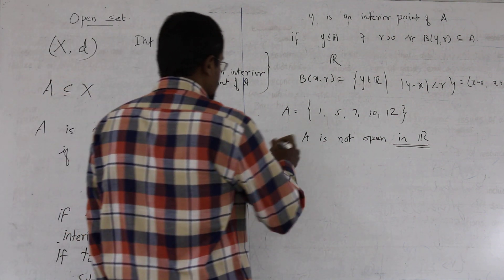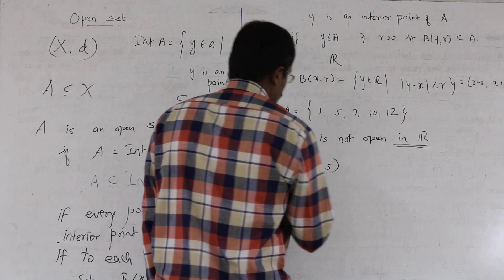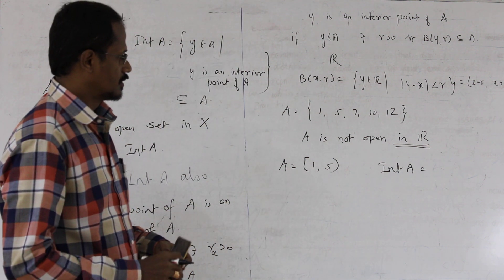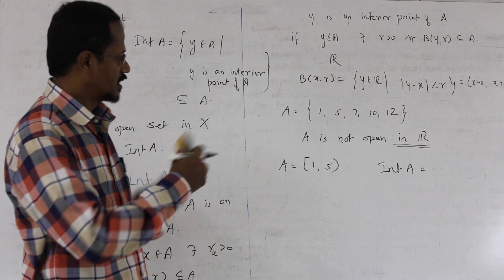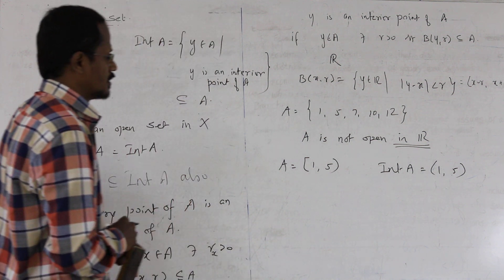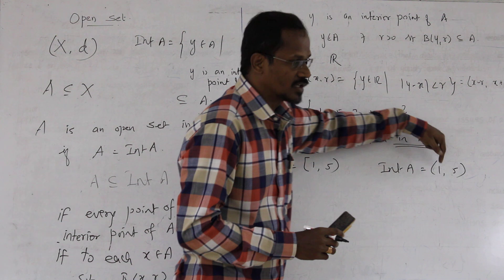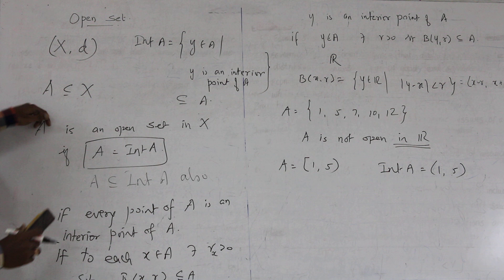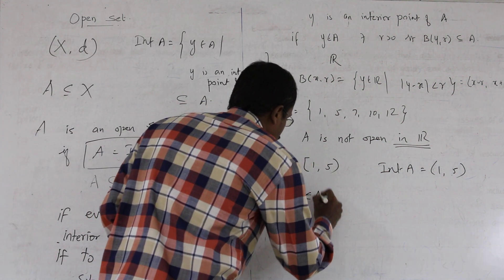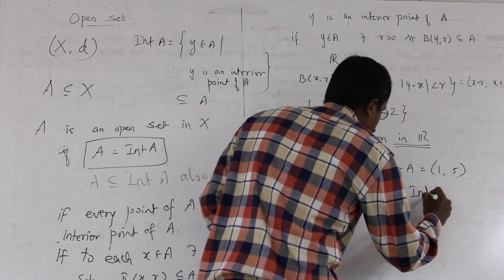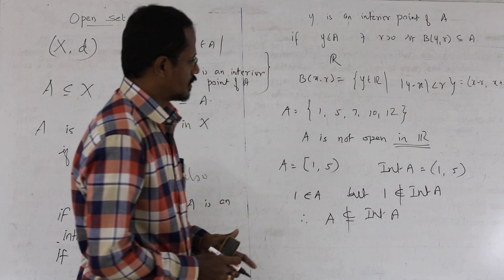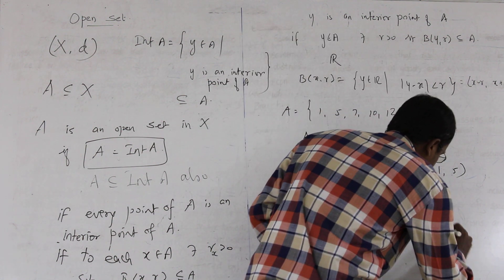For the second case, take A = [1, 5] (closed interval). We recollect what the interior of this set A is. The interior of A is the open interval (1, 5). Now checking the definition of open set: A is open if A = interior(A). Here, the point 1 belongs to A but 1 is not in the interior of A. Therefore we cannot say A ⊆ interior(A).